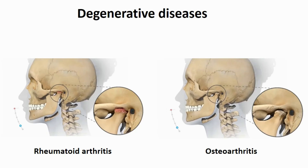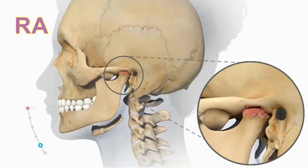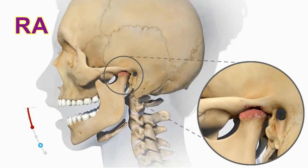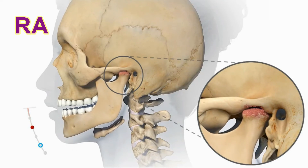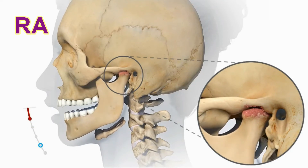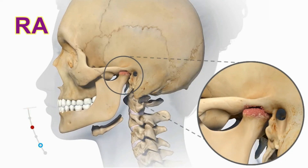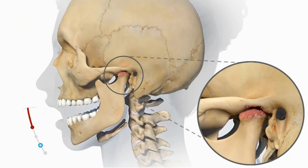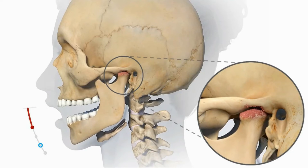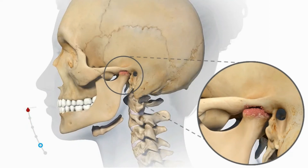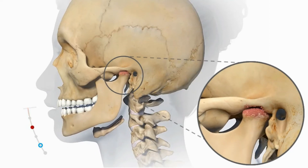Degenerative diseases — the most common diseases affecting the TMJ are osteoarthritis and rheumatoid arthritis. Rheumatoid arthritis is an inflammatory autoimmune condition that occurs when the body's immune system mistakenly attacks its own cells. RA commonly affects joints throughout the body, including the jaw, causing inflammation which leads to redness, swelling, pain, warmth, and stiffness in the affected joints.